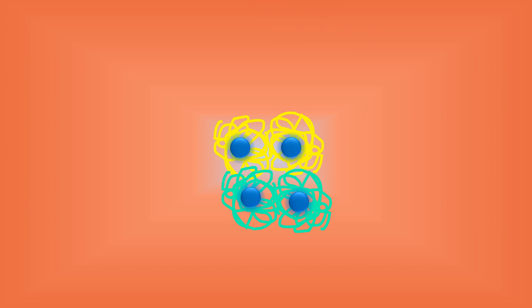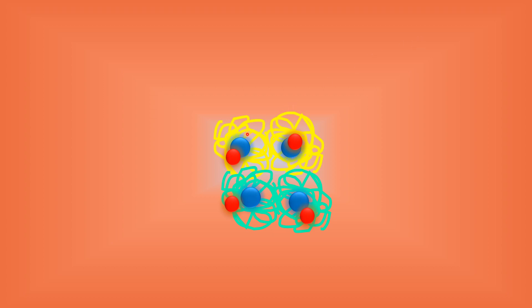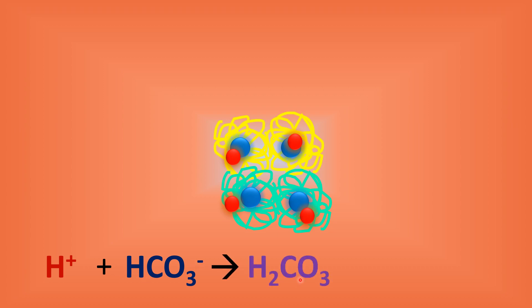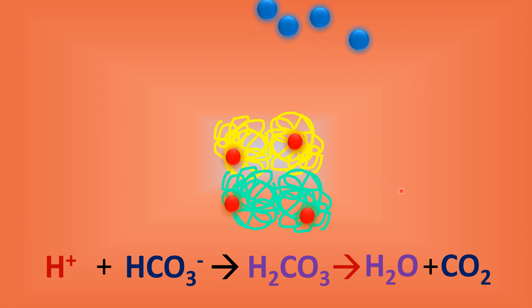Now let's look at the mechanism behind the Haldane effect. When oxygen molecules bind to hemoglobin, hemoglobin becomes more acidic, causing it to release H+ ions. These H+ ions bind to bicarbonate to form carbonic acid, which then splits into water and releases carbon dioxide molecules.